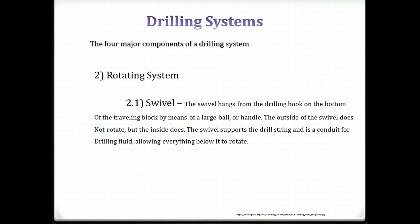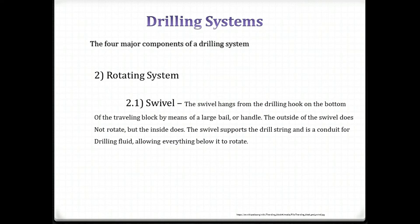The swivel hangs from the drilling hook on the bottom of the traveling block by means of a large bale or handle. The outside of the swivel does not rotate, but the inside does. The swivel supports the drill string and is a conduit for drilling fluid, allowing everything below it to rotate.